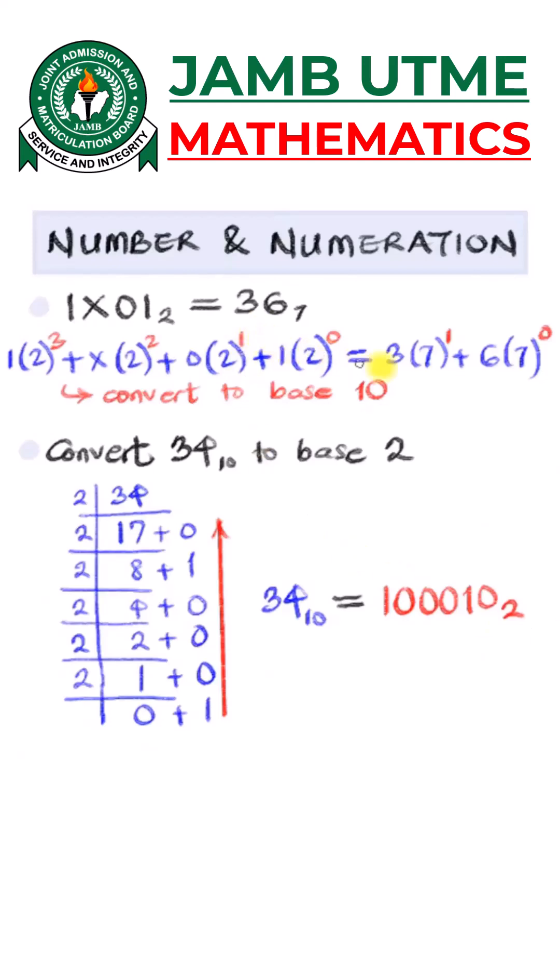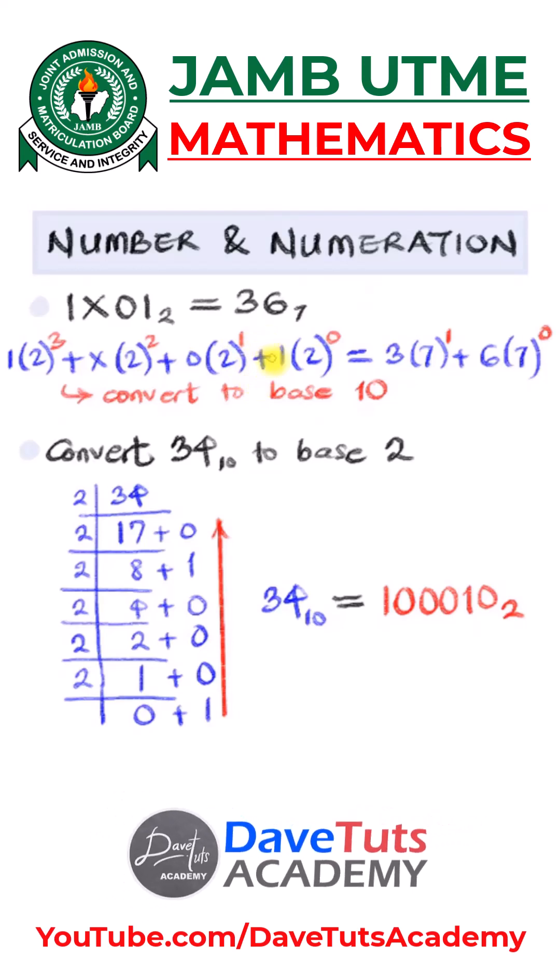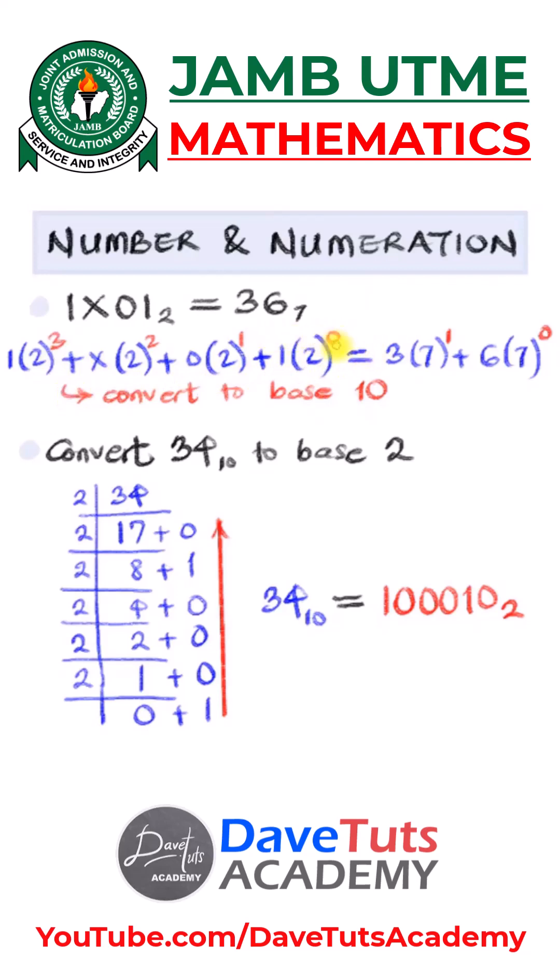In number and numeration, first you need to understand your number base as featured here and you need to know how to convert from some other base to base 10, in which you multiply with that particular base and you increase the power from 0 to 1, 2 and 3. And then again here you can increase the power from 0 to 1 so that you can convert to base 10.